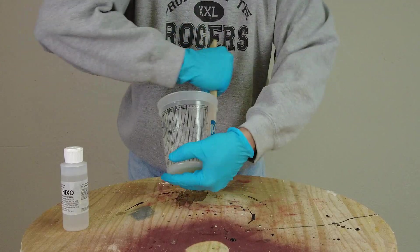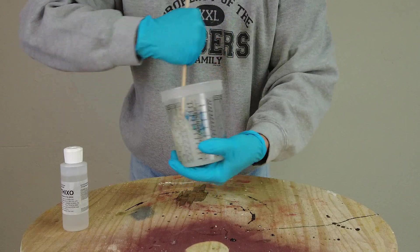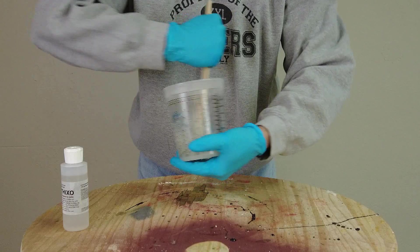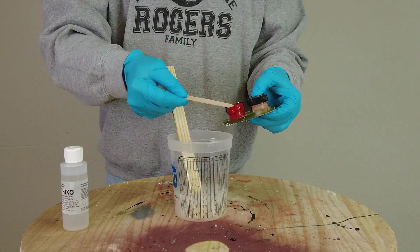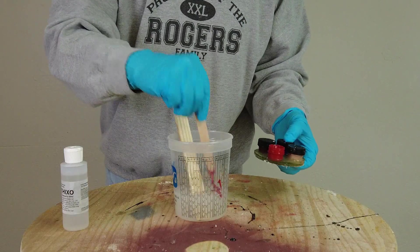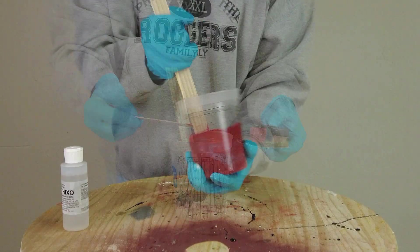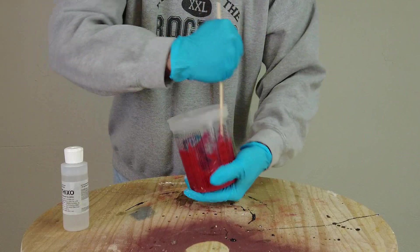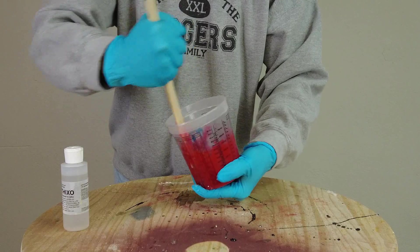Once that's mixed up really well, I'm ready to do two things: add the pigment and the Thixo. The only reason I'm adding pigment is so I can track my progress. This doesn't affect the function, but adding silicone pigment will help me see it better when applying it as a brush-on mold material. We're going to get that pigment stirred in really well.